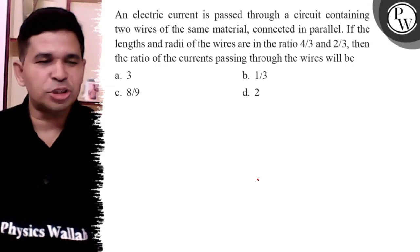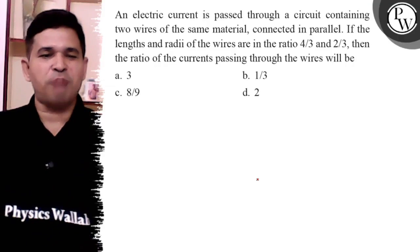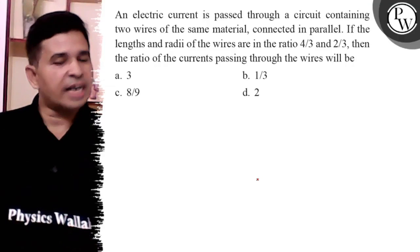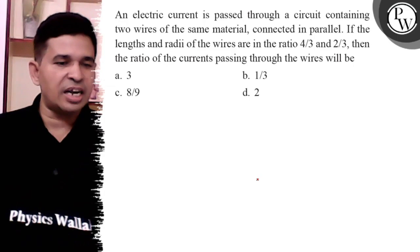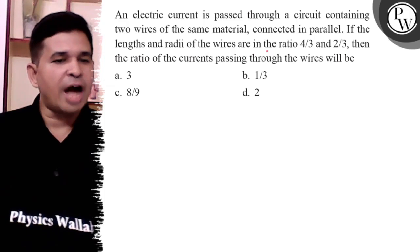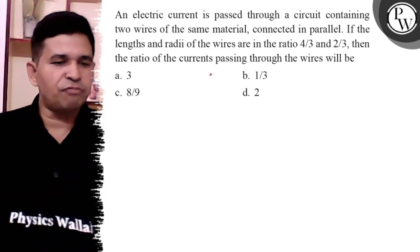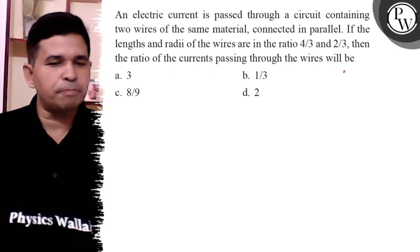Hello Bacho, let us see this question. An electric current is passed through a circuit containing two wires of same material connected in parallel. If the length and radius of the wires are in the ratio 4 by 3 and 2 by 3, then find the ratio of current passing through the wires.